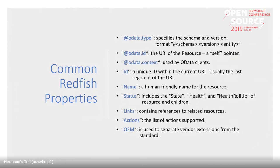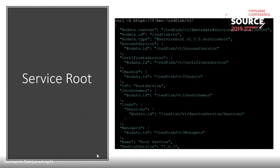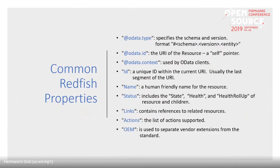Links contain references to related resources — for example, from the BMC there's a 'manager for chassis' link to the chassis, and from the chassis there's a 'managed by' link to the BMC. Actions are used for things like booting the system or rebooting the BMC. OEM is used to separate vendor extensions from the standard.